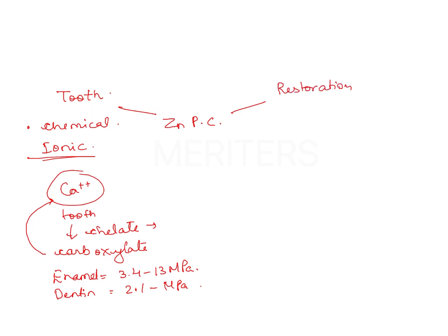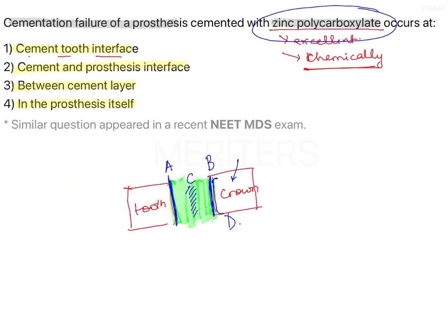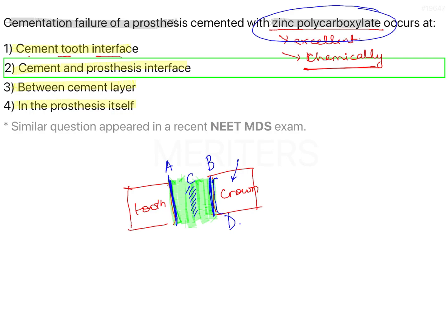On the contrary, when you talk of the restoration or crown — which can be gold or base metal — chemical bonding of the cement to the restoration is very unlikely. Gold is inert in itself, and base metal alloys have an oxide layer or passive layer which will not allow the chemical reaction to happen. So in general, whenever zinc polycarboxylate bond fails, it is because of this lack of bond between these two materials — the failure occurs at the cement-restoration interface.